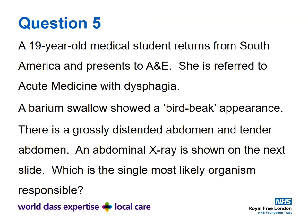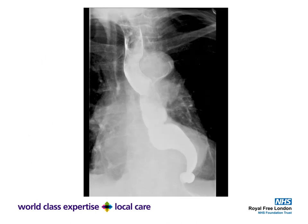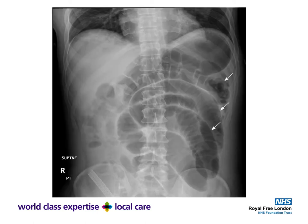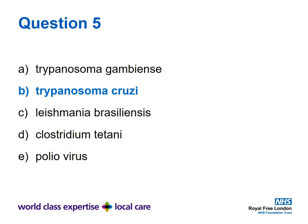Question five was a tough one: a 19-year-old medical student returning from South Africa presents with dysphagia. A barium swallow showed a bird-beak appearance, and she had a grossly distended abdomen with tenderness. The bird-beak sign is visible here — imagining a bird flying down to the ground, the beak points toward the bottom. Her abdominal X-ray shows grossly distended loops of bowel as indicated by the arrows. The answer is B: Trypanosoma cruzi.